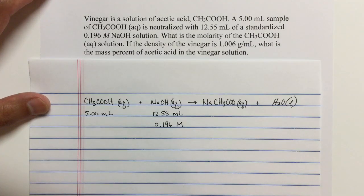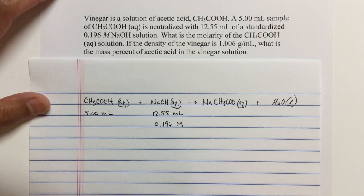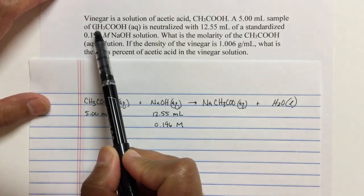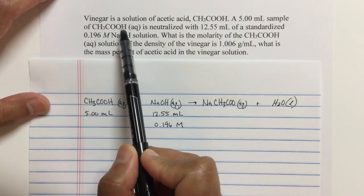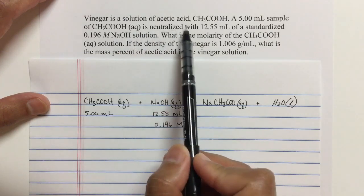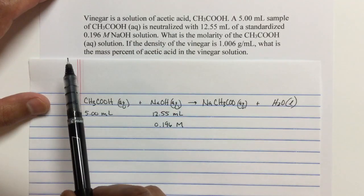So in this video, let's do a titration problem. In this example, we're going to take a vinegar solution. A vinegar solution is a solution of acetic acid. Vinegar is a common name for that.